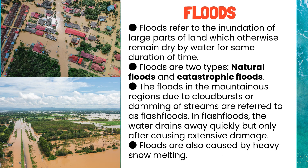Floods refer to the inundation of large parts of land which otherwise remain dry by water for some duration of time. Floods are of two types: natural floods and catastrophic floods. The floods in mountainous regions due to cloudbursts or damming of streams are referred to as flash floods. In flash floods, the water drains away quickly but only after causing extensive damage.